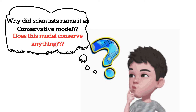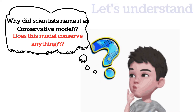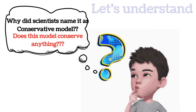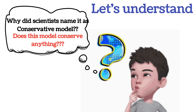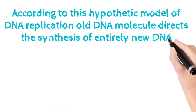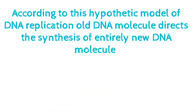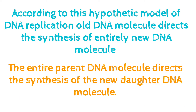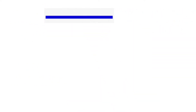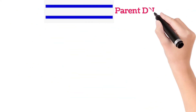Three models were widely accepted among all the hypotheses: the conservative model of DNA replication, the semi-conservative model of DNA replication, and the dispersive model of DNA replication. We will now see the first model in detail — the conservative model.